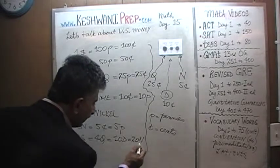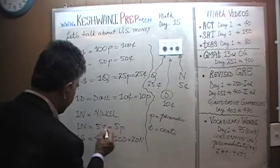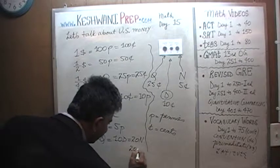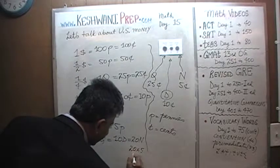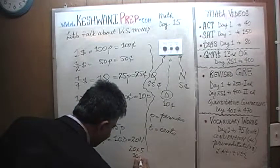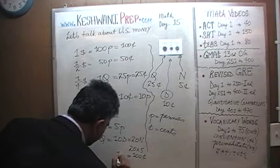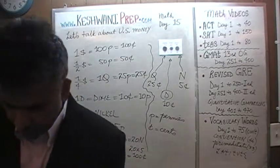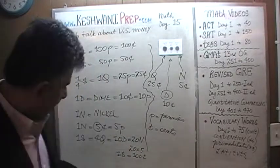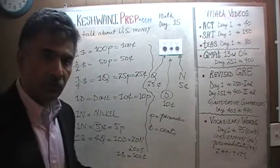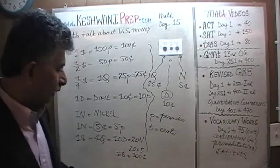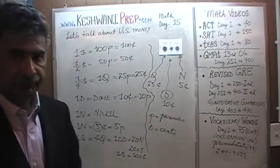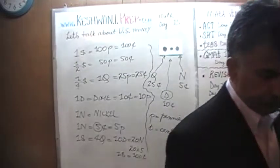One nickel is five cents, so 20 nickels — 20 times 5 — gives us 100 cents, which is one dollar. That was a quick introduction to the different coins of the US. Bye now!